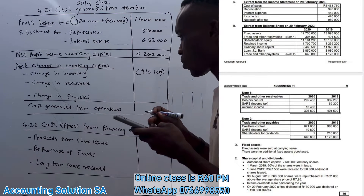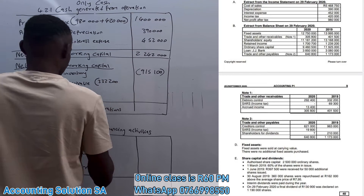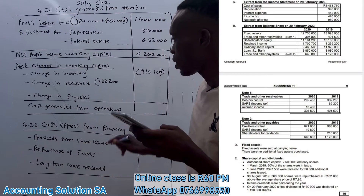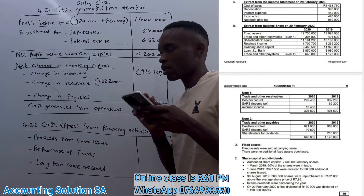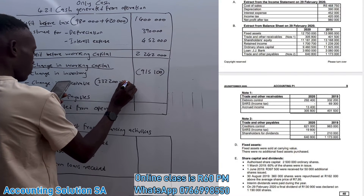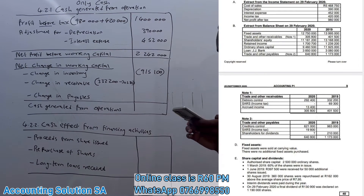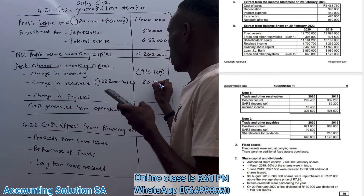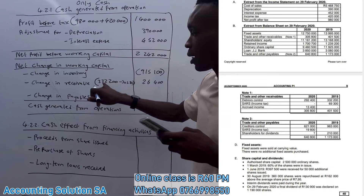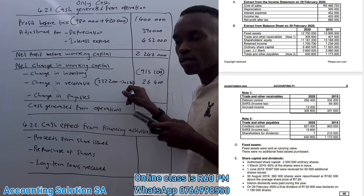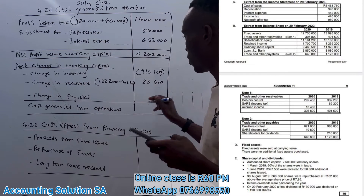For 2019, excluding the 69,300 source income tax, we get 382,200. For 2020, we take only the applicable figures — 292,000 plus 13,400 — giving 305,800. Subtracting the two gives a difference of 26,000. Since the 2019 receivables balance decreased, our debtors have paid us, meaning money was received — this is an inflow, so no brackets are needed.